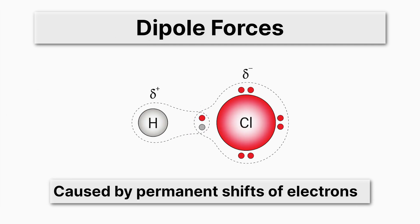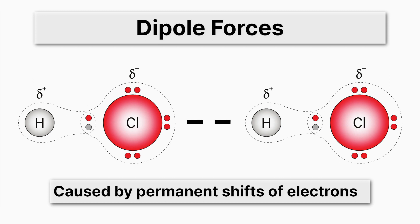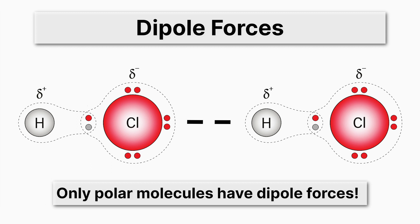Next up, we'll talk about dipole forces. These are caused by permanent shifts of electrons. Here we have an HCl molecule, and the chlorine permanently has a little extra electrons around it compared to the hydrogen. So the chlorine is negative while the hydrogen is positive. If we imagine two of them next to each other, there's an attractive force between them. This happens whenever we have polar molecules — only polar molecules have dipole forces.